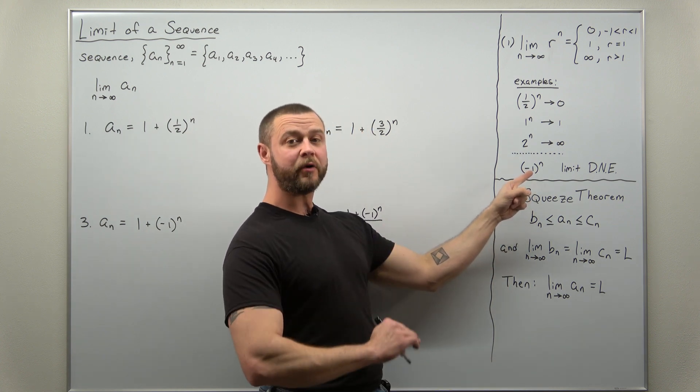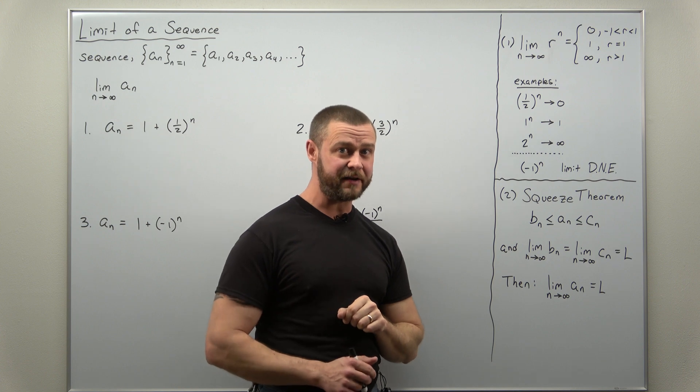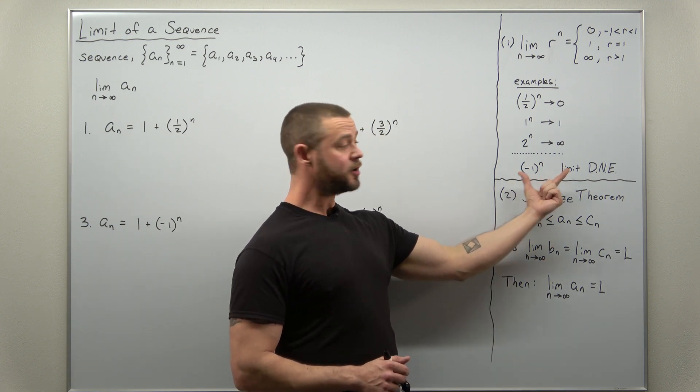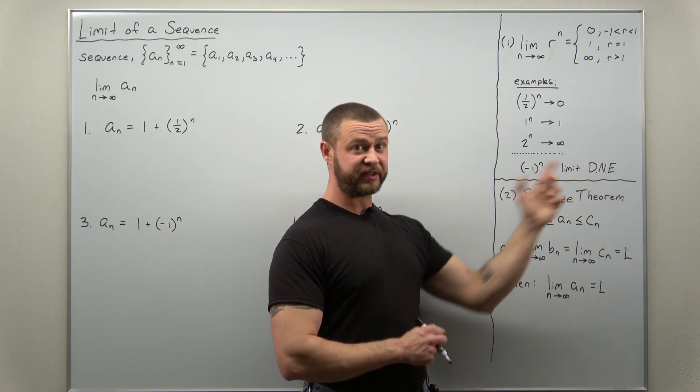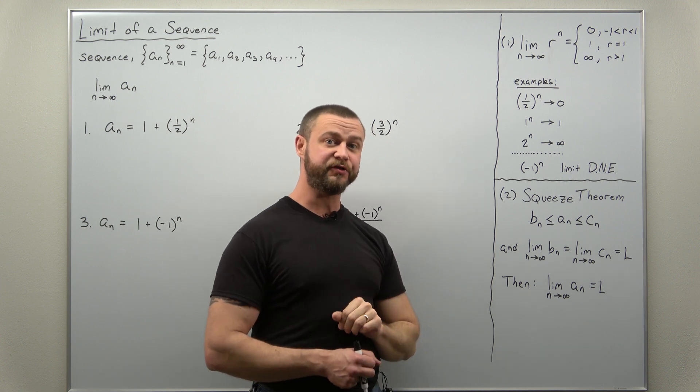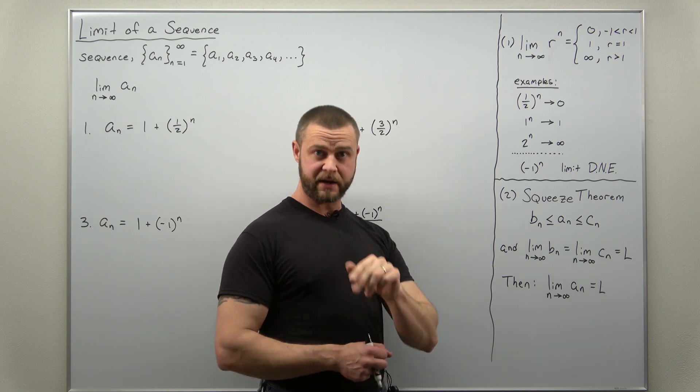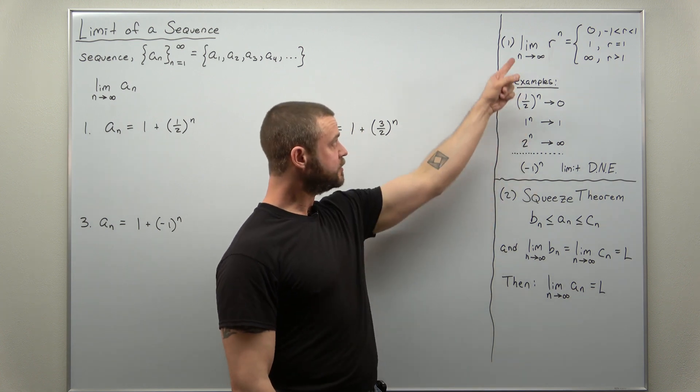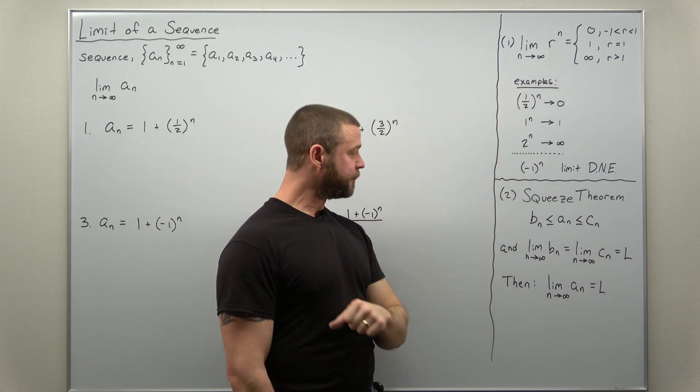The terms will never approach a single finite number. So for this term, the limit does not exist as a sequence, since it approaches two different numbers, one and negative one. Alright, so we're going to use this result in a lot of these examples.